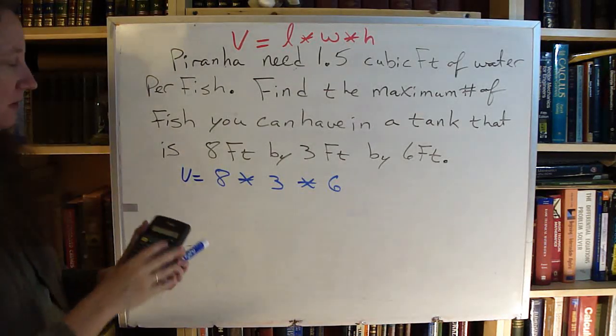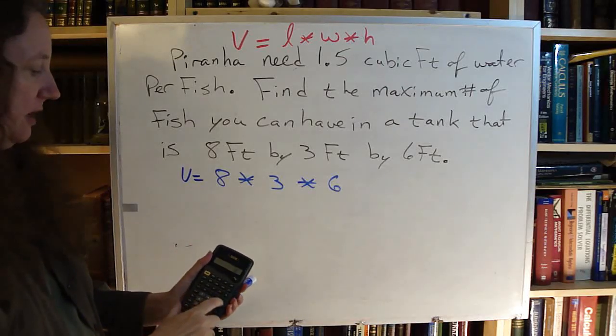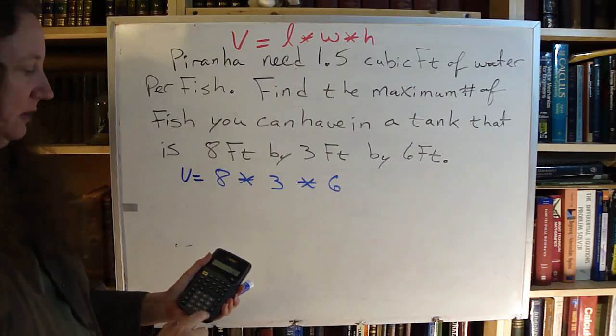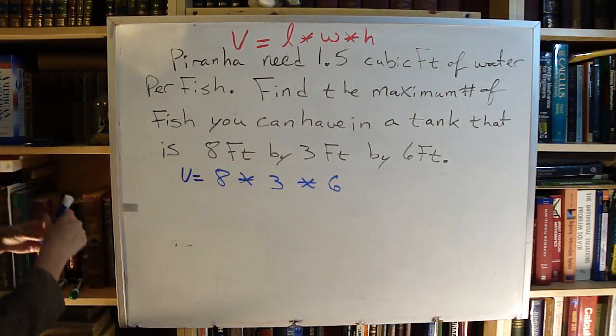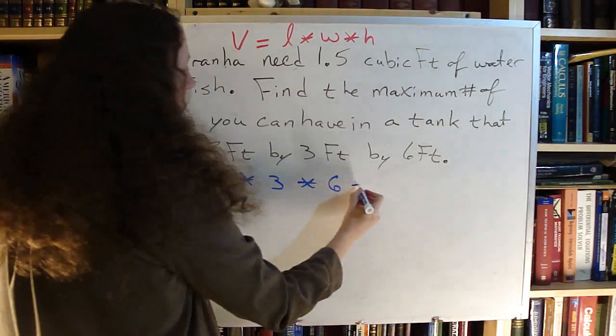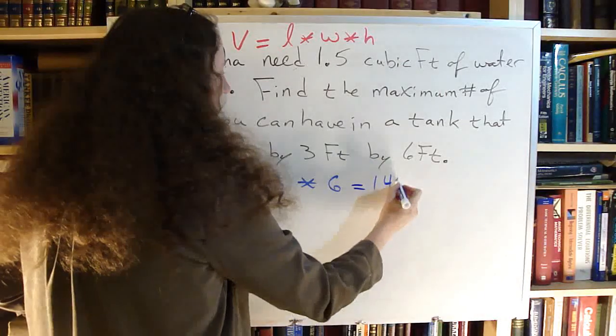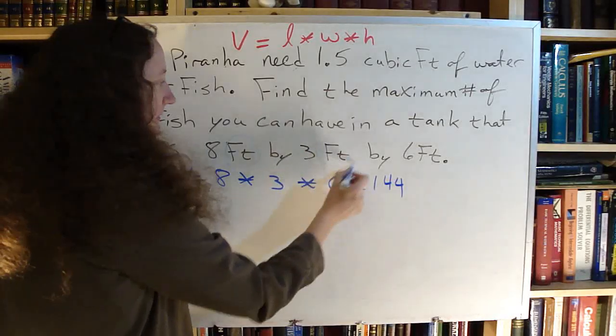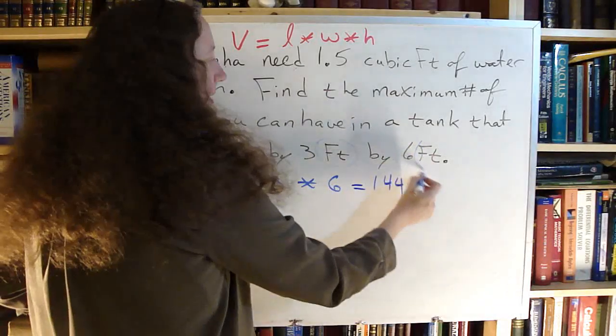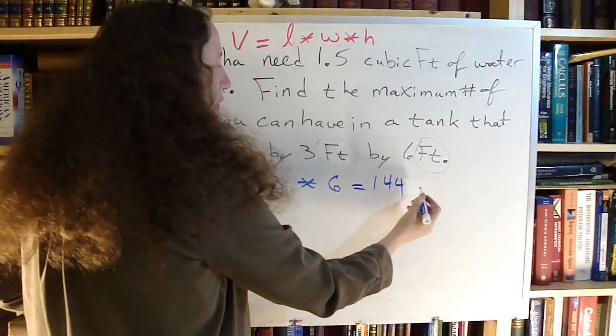Grab my calculator, type it in, 8 times 3 times 6 equals 144. My units were feet being multiplied by feet and multiplied by feet again. So that's cubic feet.